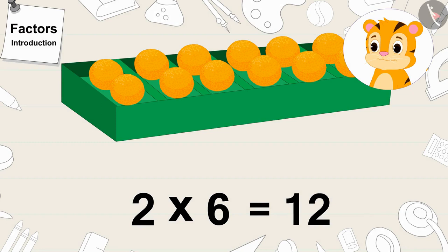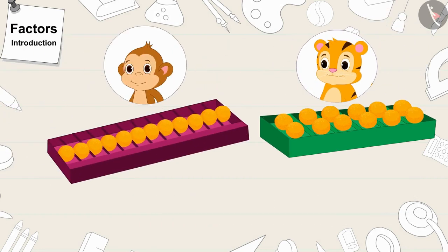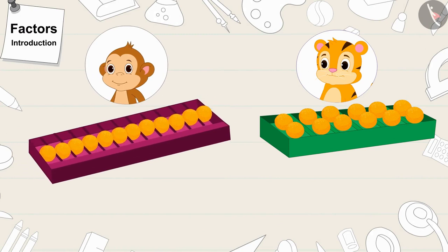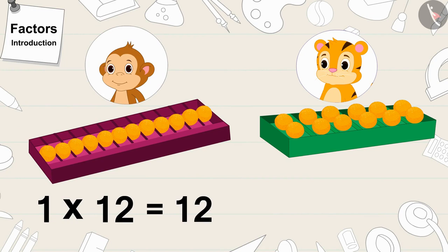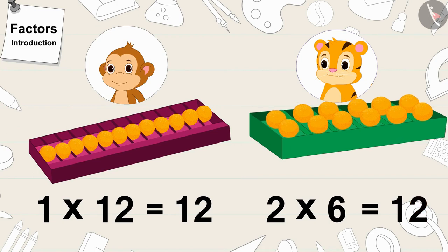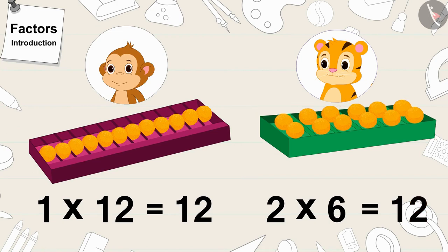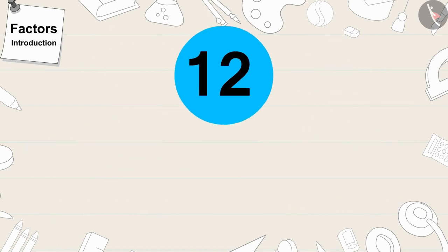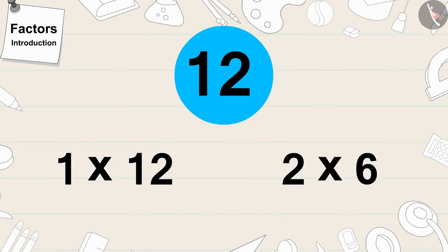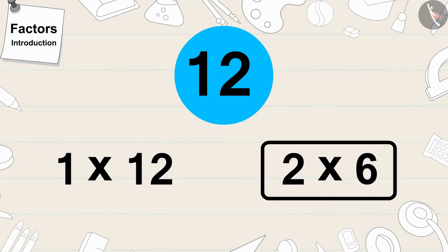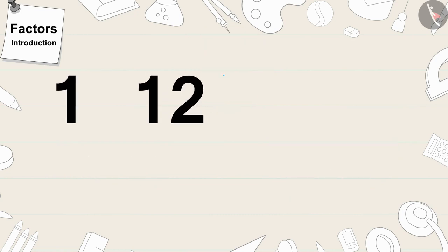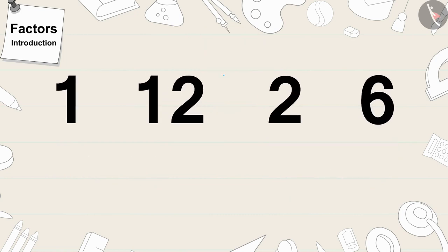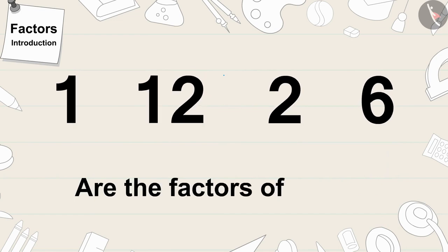Children, if we look closely, we will find that in Babban's box there are 1 times 12 laddus, and there are 12 laddus in Shere Khan's box too. In other words, we can write 12 as 1 times 12 or 2 times 6. So 1, 12, 2, and 6 are the factors of 12.